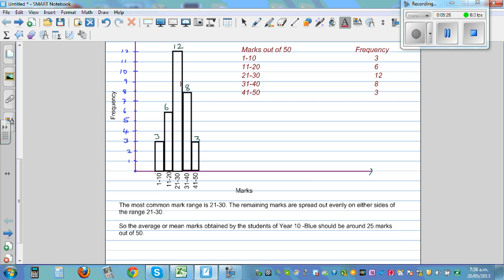The average, which is the mean, should be between 21 to 30, which is about around 25.